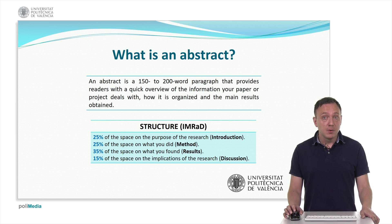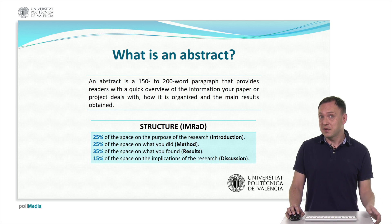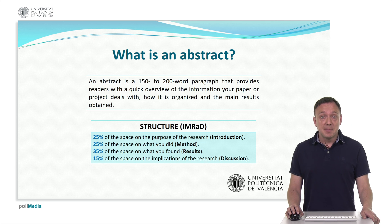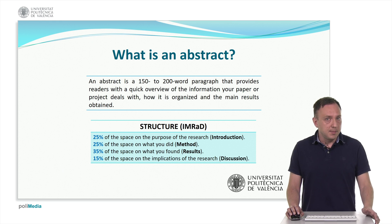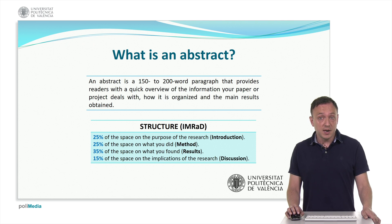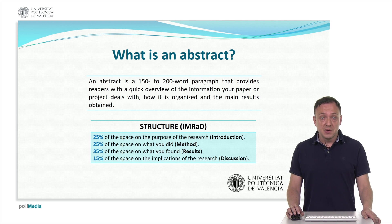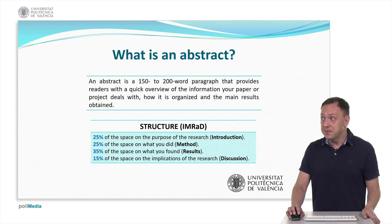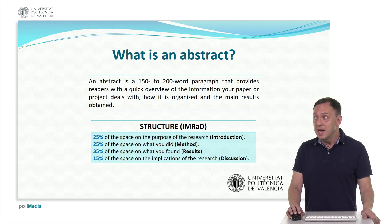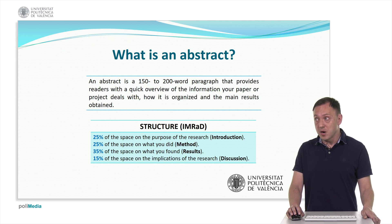As a practicing engineer, you will most likely need to write academic papers presenting your research results. Writing papers is perhaps the most important way to convey your ideas to other engineers, a committee or customers. Your communication skills will therefore largely determine how successful you are as an engineer. Academic papers usually start with an abstract, and an abstract is a 150 to 200 word paragraph that provides readers with a quick overview of the information your paper or project deals with.